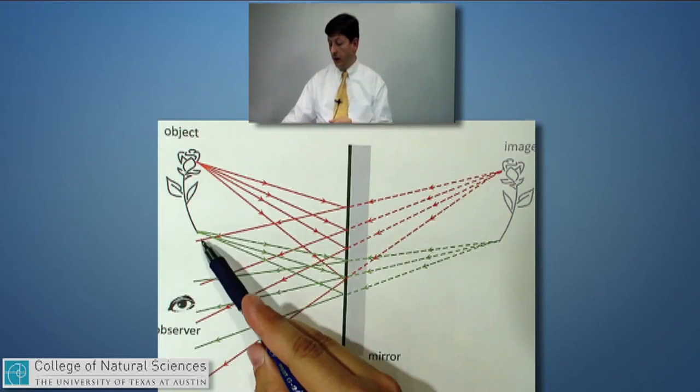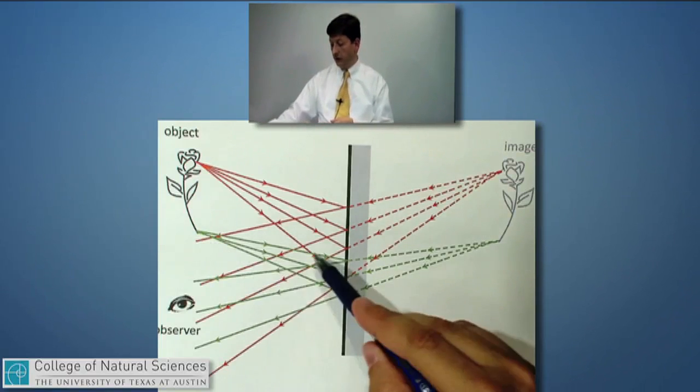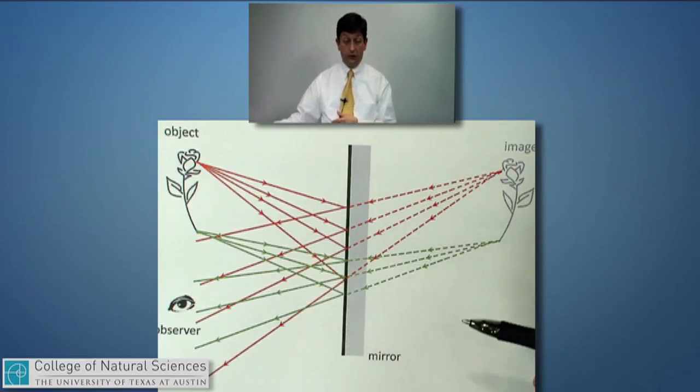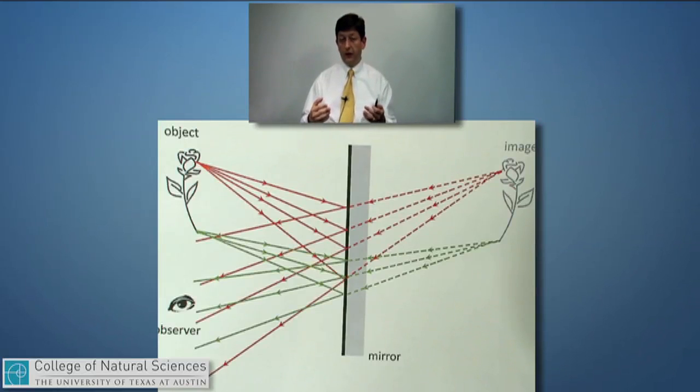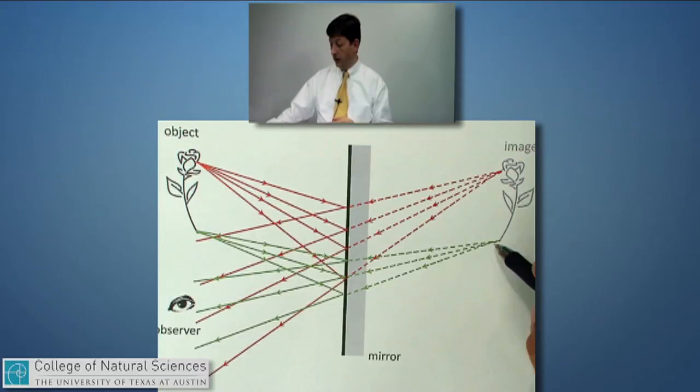We could do the same for the base of the flower. We could draw a bunch of light rays coming in all different directions. I've just drawn three in this picture. And we would see a bunch of light rays heading out away from the mirror. They would appear to be diverging again. Our mind doesn't realize that they reflected off the mirror and instead tries to extrapolate them back toward a common origin and they would meet right there.